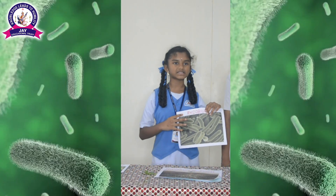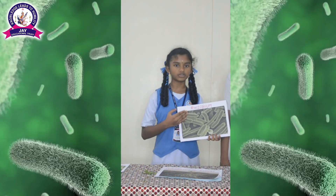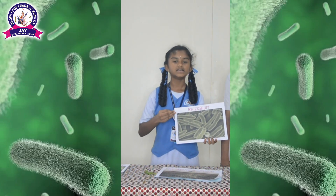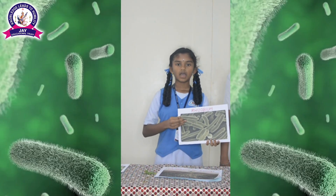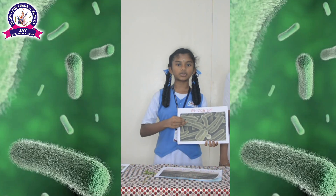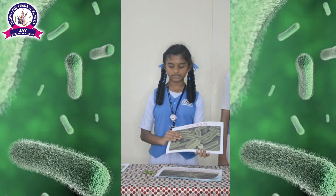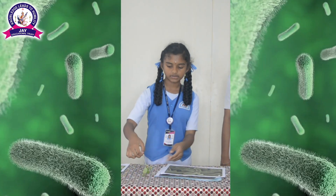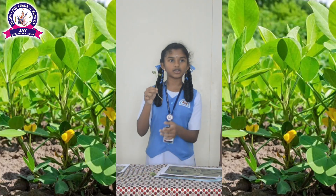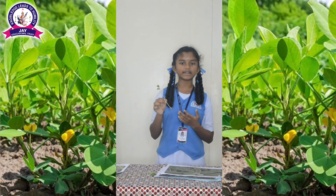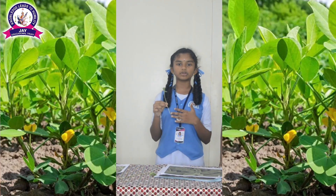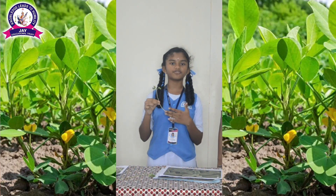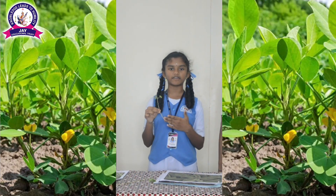Rhizobium: It is a bacteria found in soil that helps in fixing nitrogen under the soil. It attaches to the roots of leguminous plants and produces nodules. These nodules fix atmospheric nitrogen and convert it to ammonia, which can be used by the plant for its growth and development.